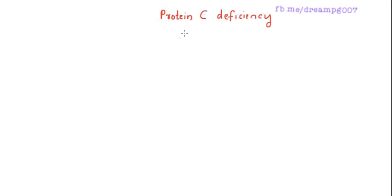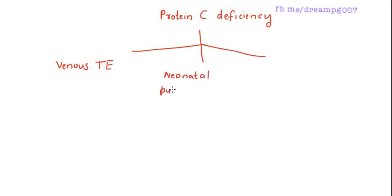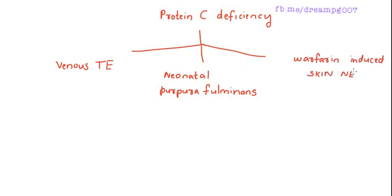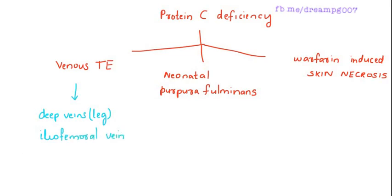Conditions usually associated with protein C deficiency are venous thromboembolism, neonatal purpura fulminants, and warfarin-induced skin necrosis. Venous thromboembolism is usually seen in the deep veins of the leg; other areas include the iliofemoral vein and mesenteric vein.